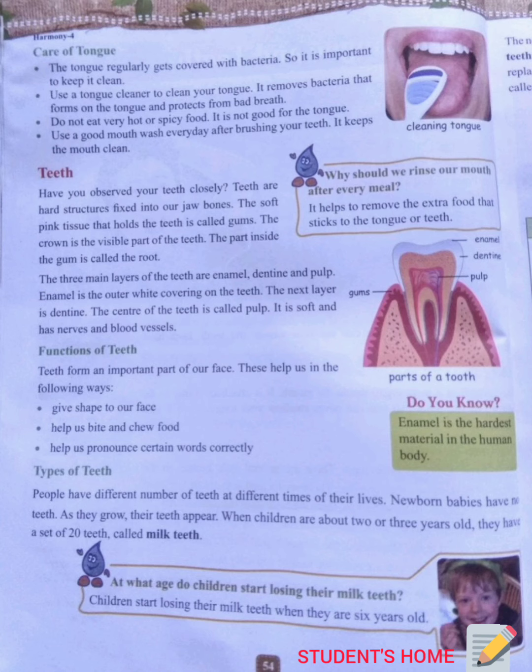Teeth are hard structures fixed into our jaw bones. The soft pink tissue that holds the teeth is called gum. The crown is the visible part of the teeth. The part inside the gum is called the root.